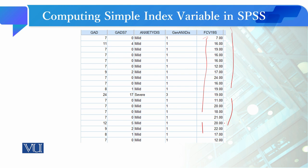This will actually score seven items added together. This is simple indexing. Now, another type is standardized indexing.